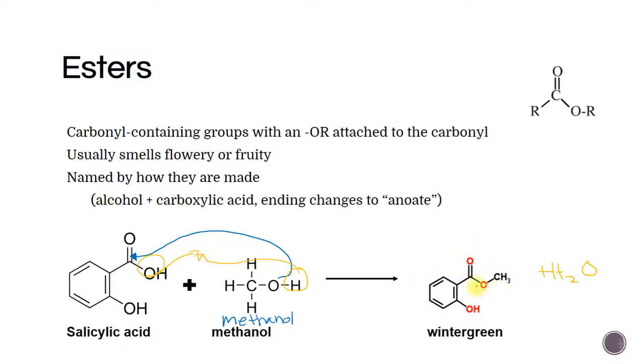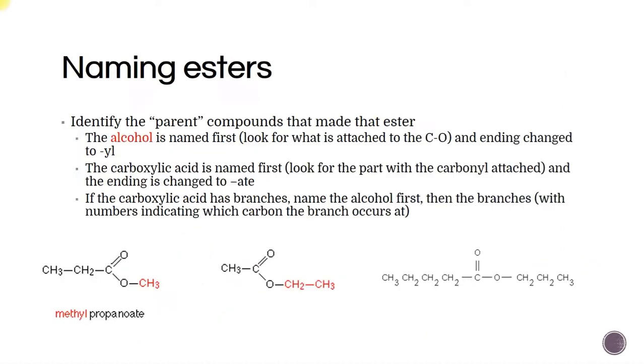So this is an ester because we have that C double bond O with another O and another carbon group. So this is the thing to look for if you think you have an ester. So the official name of this thing is going to end in -anoate. Okay, so let's go to an easier example here.